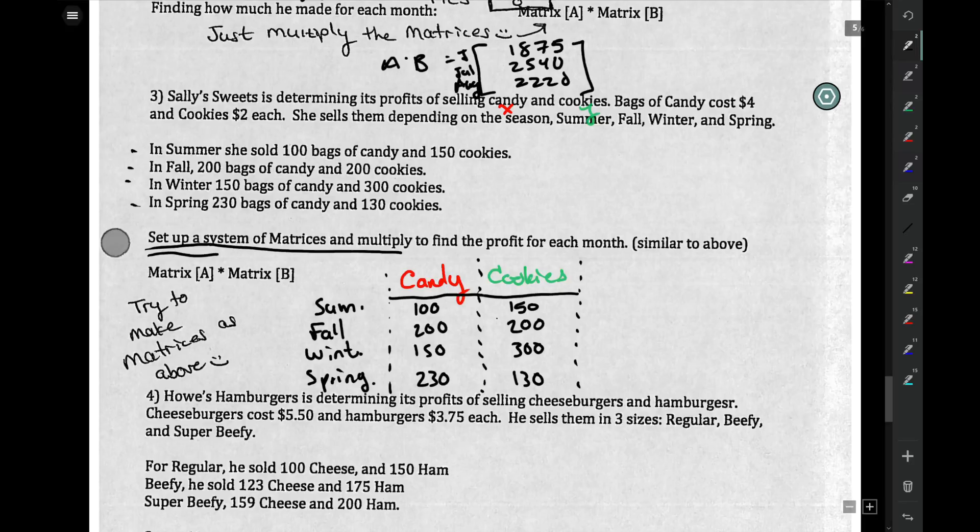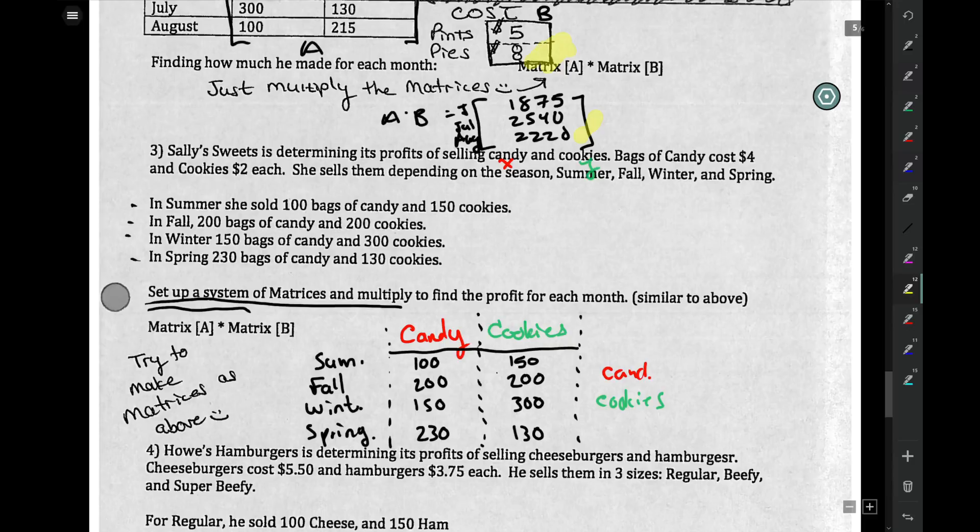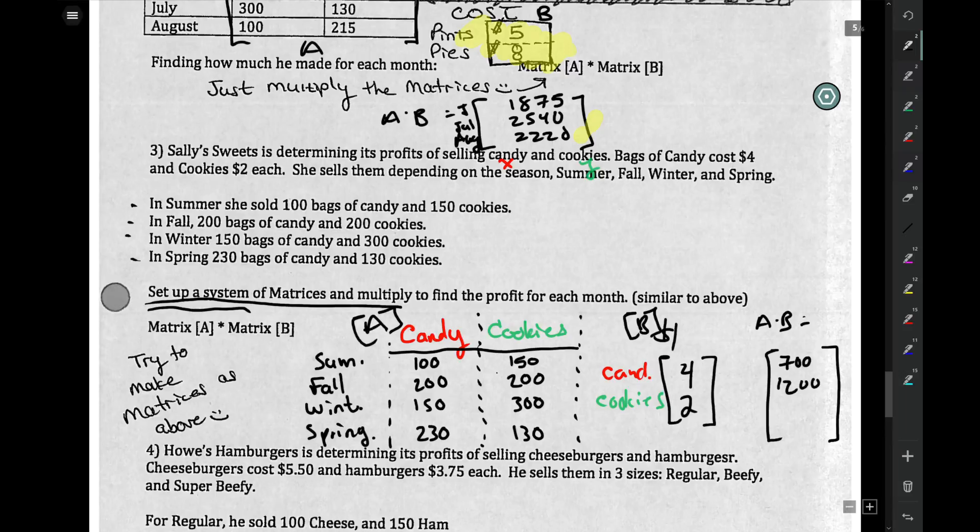Now, it says set up a system of matrices. So you also need another matrix with the cost. So candy and cookies. Again, look at this one above. That's how they're set up. And you need the cost. Well, candy costs $4 each. Cookies, $2. Matrix A, matrix B, multiply the two, and it gives you your matrix for each season.